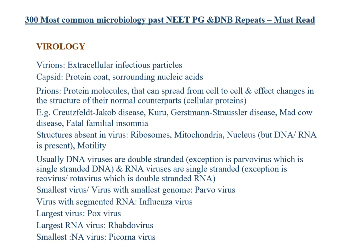Starting with virology: virions are extracellular infectious particles. Capsid is a protein coat surrounding nucleic acid. Prions are protein molecules that can spread from cell to cell and effect changes in structure of their normal counterparts, i.e., cellular proteins. Examples of prion-causing diseases: Creutzfeldt-Jakob disease, Kuru, Gerstmann-Sträussler-Scheinker disease, mad cow disease, fatal familial insomnia. Structures absent in virus are ribosomes, all intracellular organelles, mitochondria, nucleus — but DNA/RNA are present. Motility is also absent in viruses.